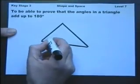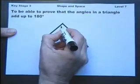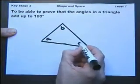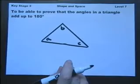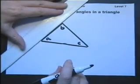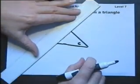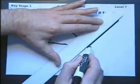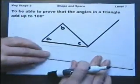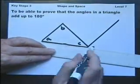I'm going to choose this particular method. Any triangle, and we label it with the angles A, B, C. We then draw a line which is parallel to that line there and continue this line here.